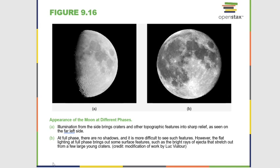The boundary between the lit and dark parts of the Moon is called the terminator — nothing to do with Arnold Schwarzenegger. Because light hits the surface at a tangent along the terminator, craters are much easier to see there than on a full moon. When looking at the Moon through a telescope, we typically look along the terminator to get the best views of craters.